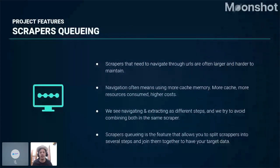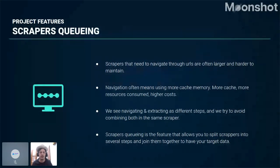This separation of navigation and extraction becomes a developer responsibility — developers need to avoid combining both in the same scraper. When we separate scrapers into these distinct steps, we needed a way to combine them when running the Airflow task. That's why we created the scrapers queuing feature, which allows us to split scrapers into extraction and discovery types and join them together to produce the final extracted data.